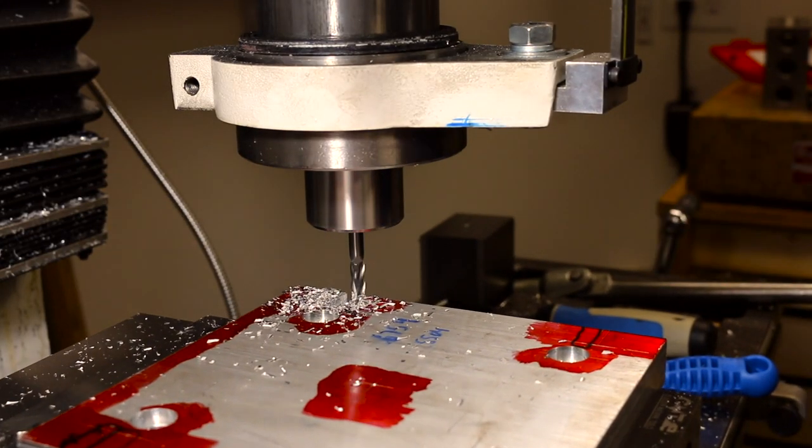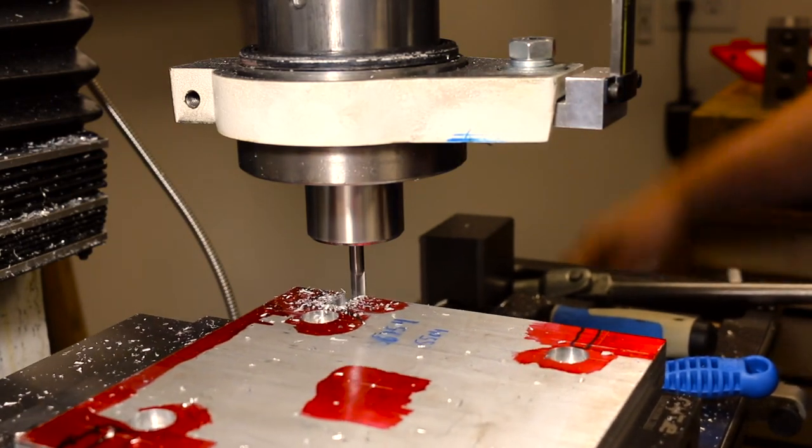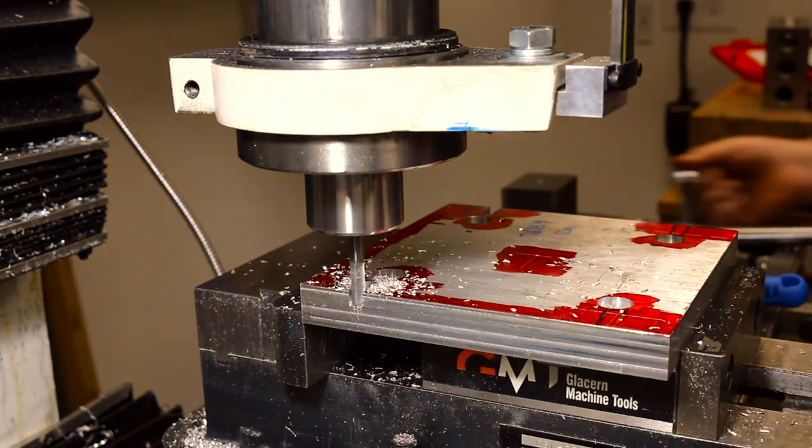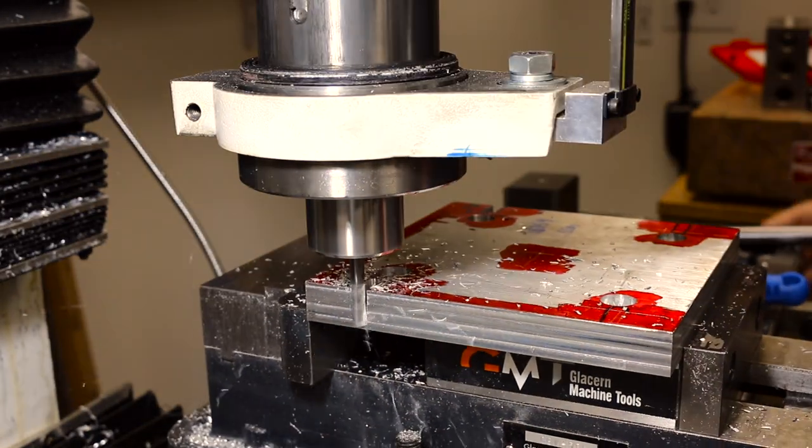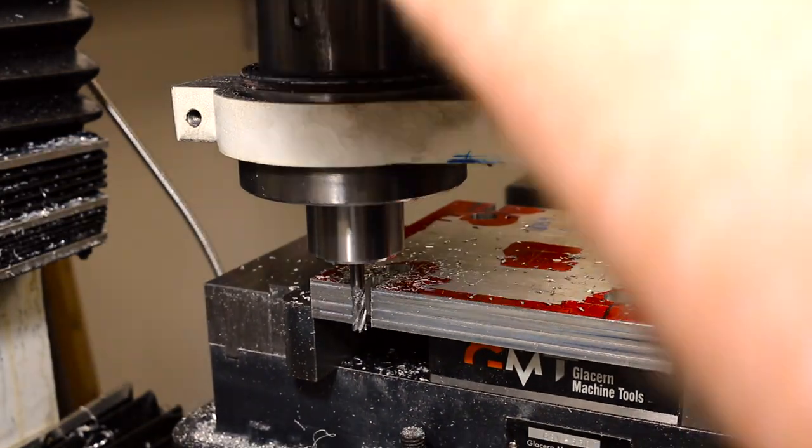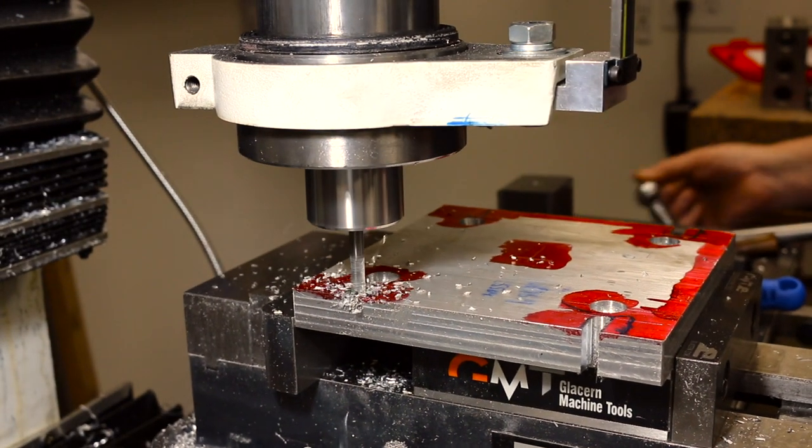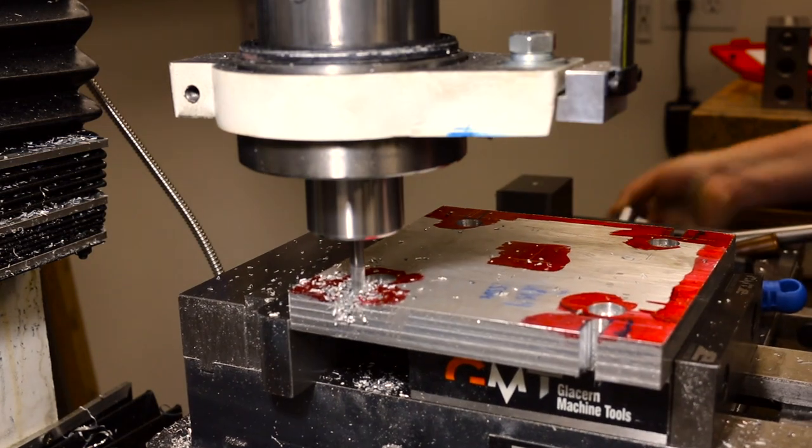Here we're getting set up to do the quarter-inch relief slots. So these are the slots that will actually mount the motor plate to the motor arms. And I have some video on that. We'll cover that in another segment.